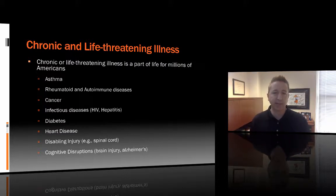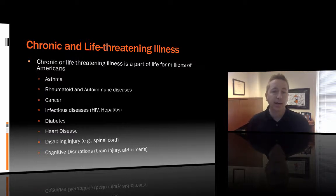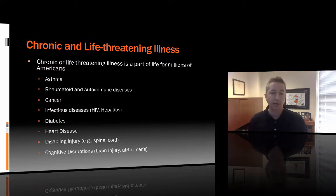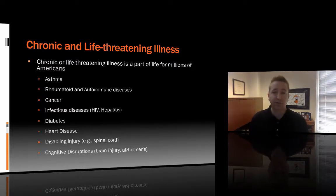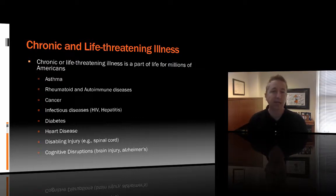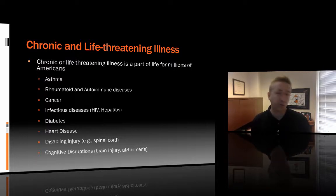There are lots of different types of chronic or life-threatening illnesses. Some of the more common ones include asthma, rheumatoid and other autoimmune diseases, and certainly cancers. Cancer is an interesting one because it straddles the definition of chronic versus life-threatening. Many cancers today are survivable for many years, so we think of them more as chronic illnesses rather than life-threatening acute illnesses as we did 30, 40, or 50 years ago.